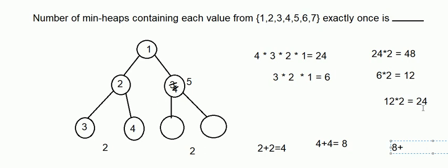So the final answer is 24 + 24 + 8 + 24 (summarizing all cases), which equals 80. When we form a min-heap with values 1 to 7, using each value exactly once, the total number of distinct min-heaps that can be formed is 80. Thank you for watching this video, and in the next video I will come up with some other problems.